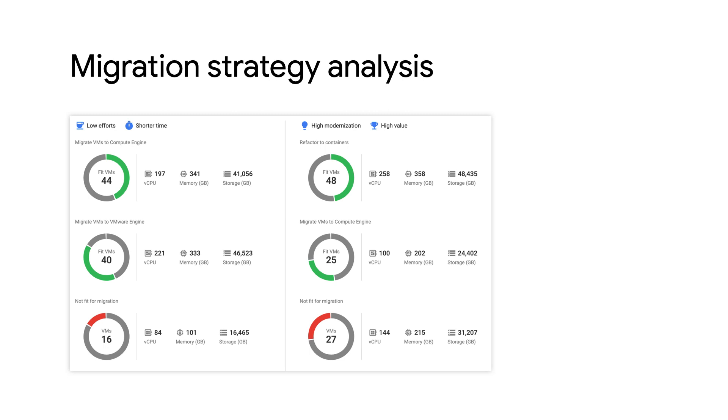The first, on the left, shows what can be achieved in a shorter timeframe and a low effort, versus a high-modernization and high-value strategy on the right. To summarize what we've seen so far, the Fit Assessment Summary report gives you a high-level overview of the different modernization strategies, based on actual data collected from your environment, which reduces uncertainties around planning your modernization journey.